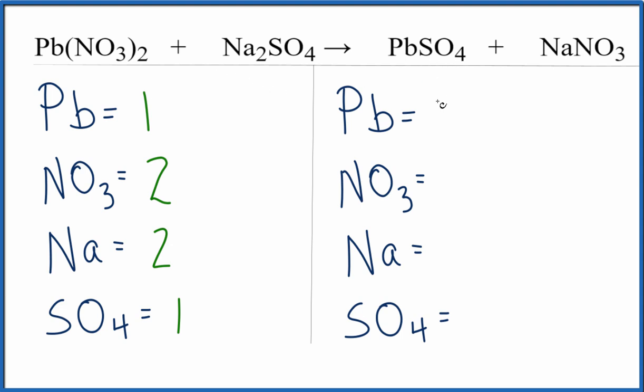On the product side, I have lead, one atom. Let's do the NO3. I have one of those. Na, I have one, and then the sulfate, I have one of those.